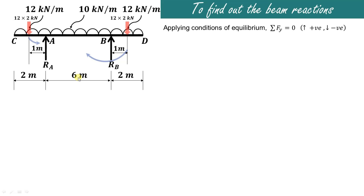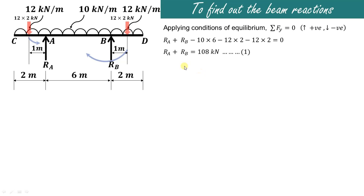Applying the condition of equilibrium: summation of forces in the Y-direction equals zero. Upward forces are considered positive and downward forces negative. Reactions RA and RB act upward, so they are positive. The central UDL 10×6 acts downward, as does 12×2 on each overhang — both negative. Solving gives RA plus RB equals 108 kN.